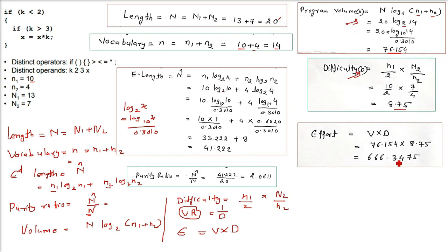So this is how we calculate the Halstead metrics. The basic thing is the number of operators and operands, and distinct operators and operands you have to find out.